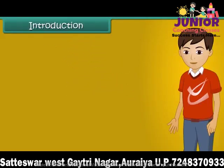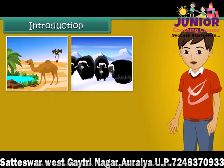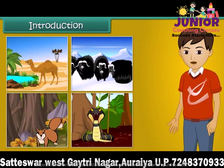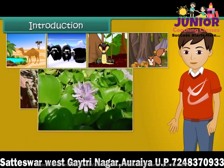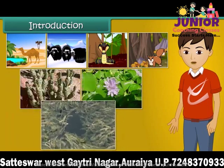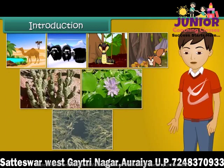Hello students. Look at the images given here. Camel, yak, squirrel, and snakes are all terrestrial animals, but their physical appearance and behavior are very different from each other. Similarly, plants like cactus, water hyacinth, and hydrilla are also different in their physical appearance and behavior. All plants and animals develop different features that help them to survive in their surroundings. Let us learn more about living organisms and their surroundings.